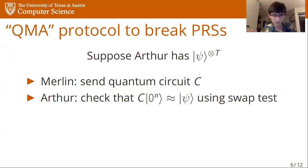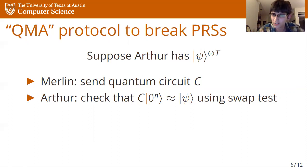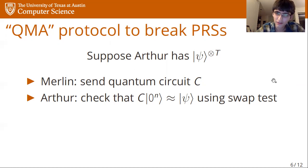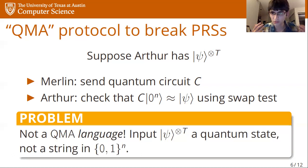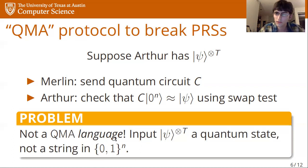What does that imply? It implies there's some QMA problem that must be hard in order for pseudorandom states to exist. Except there's one problem with this: while this is a quantum Merlin-Arthur protocol, this does not define a QMA language. The reason is that the input here — the state Psi — is fundamentally a quantum input, not an n-bit string. But complexity classes like QMA, BQP, P, and NP are defined in terms of languages, which are subsets of n-bit strings.